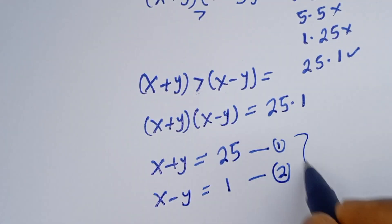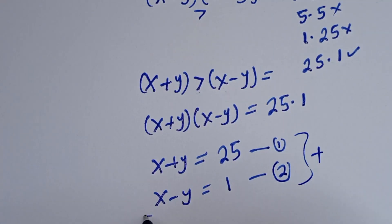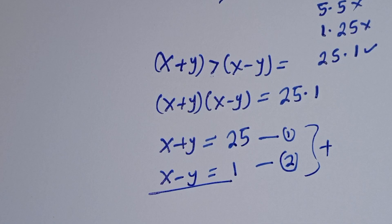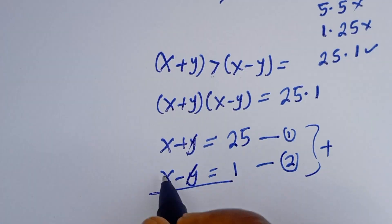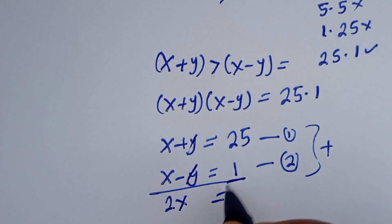We can now solve the two equations simultaneously using the elimination method by adding equations 1 and 2 together. If you add them together, X plus X is 2X, which equals 25 plus 1, that is 26.